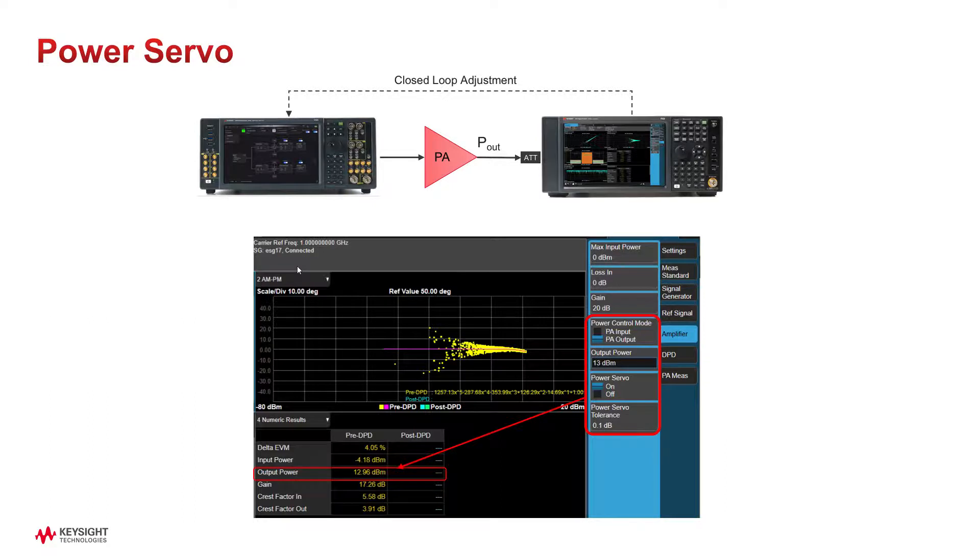For convenience, there is a power servo mode to automate this closed-loop process in PA mode. You can set tolerance level, and power is automatically adjusted to the specified level.